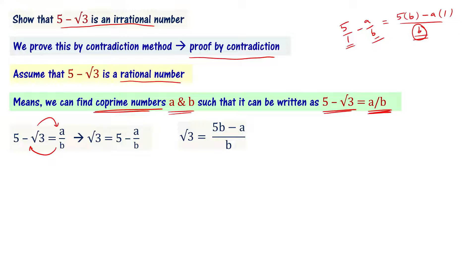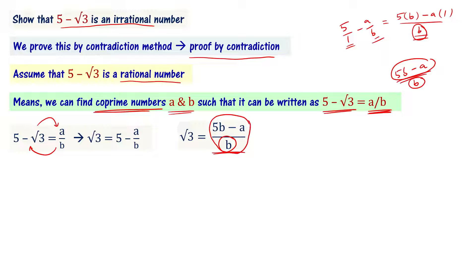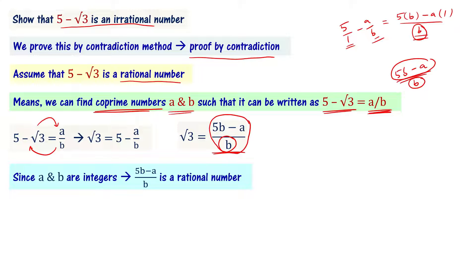Since 5b minus a is one integer and b is another integer, root 3 equals 5b minus a divided by b, meaning it is expressed as a ratio of two integers. Therefore 5b minus a divided by b is a rational number, which means root 3 would also have to be a rational number.